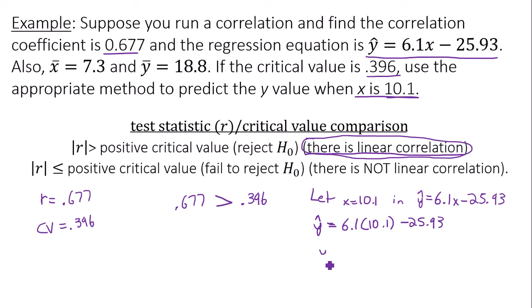Use your calculator to compute this. And it turns out you're going to get a negative, so you'll end up getting 35.68 as the predicted y value when x equals 10.1.